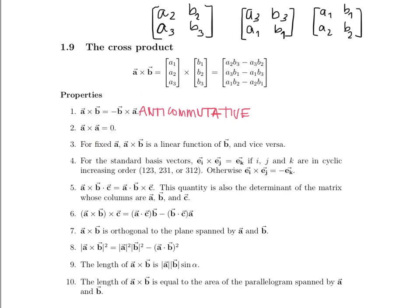This seems pretty clear when we look at the recipe. Imagine instead of B1, B2, B3, we just had another A1, A2, A3 vector. Then this would say A2 times A3 minus A3 times A2, and since multiplication commutes, A2 times A3 is the same as A3 times A2, and so this would be zero. Doing the same thing for the other components, each component ends up being zero, giving us the zero vector.